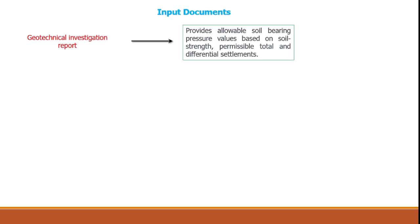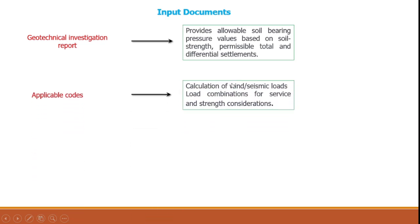The important input documents needed before proceeding to analysis and design include: first, the geotechnical investigation report, which should provide allowable soil bearing pressures, permissible total and differential settlements, unit weight of soils, water ratios, and the presence of groundwater.